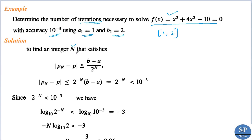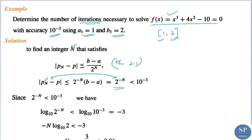We have to find the minimum number of iterations necessary to solve this with accuracy 10^(-3). We need to find an integer n such that |pn - p| ≤ (b - a)/2^n by Theorem 2.1. The absolute value |pn - p| ≤ (b - a)/2^n, and since b = 2 and a = 1, b - a = 1, so this becomes 2^(-n). The error should be less than 10^(-3), so we require 2^(-n) < 10^(-3).